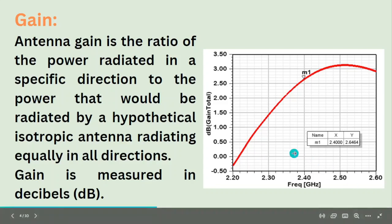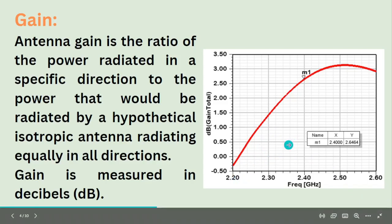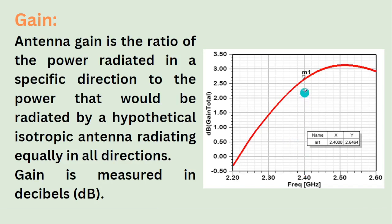Here this is a plot which shows the gain versus frequency. In this particular graph you can see at 2.4 megahertz we have a gain of 2.6464. So likewise, at different frequencies we have different gains exhibited by a specific antenna.